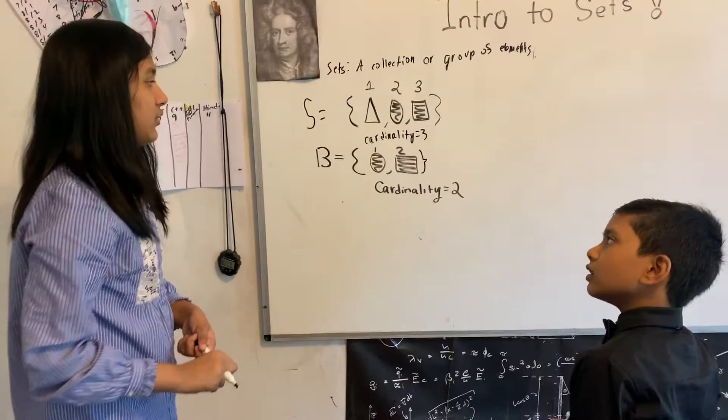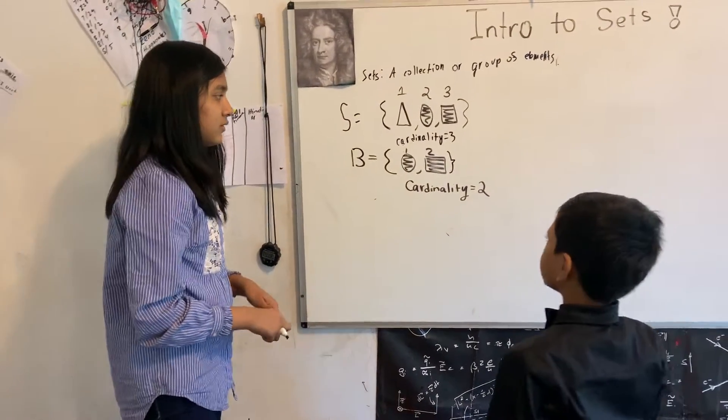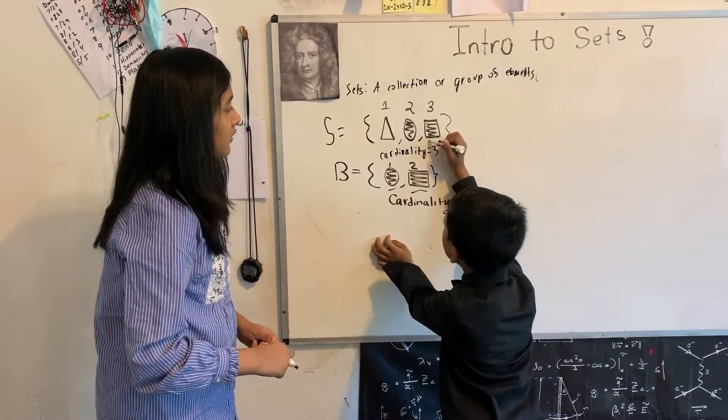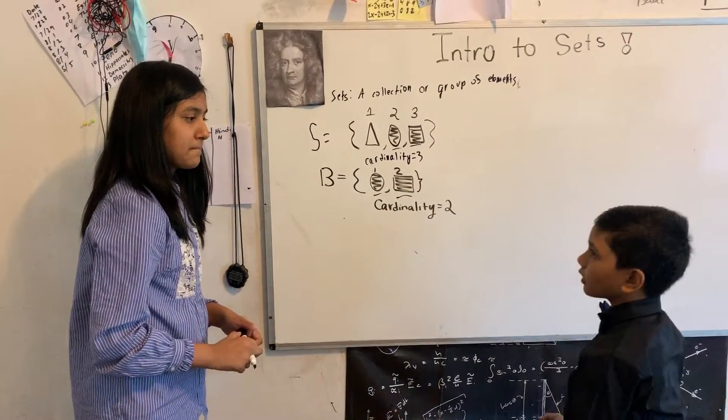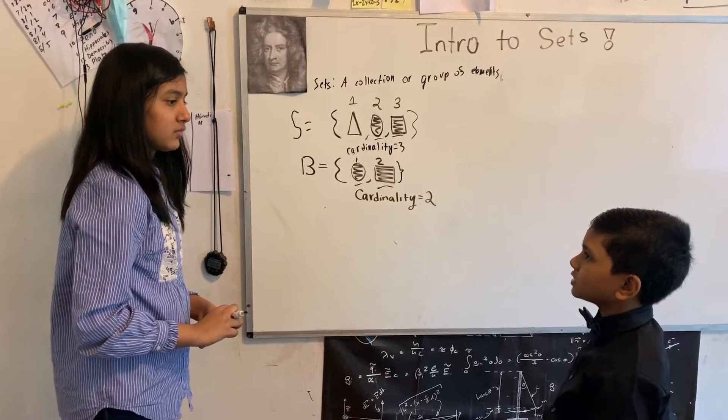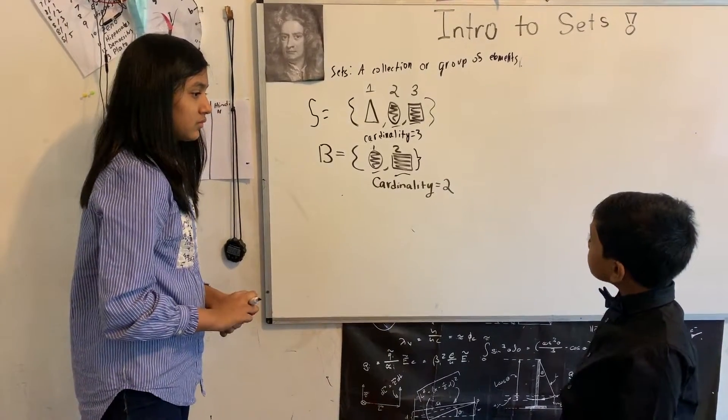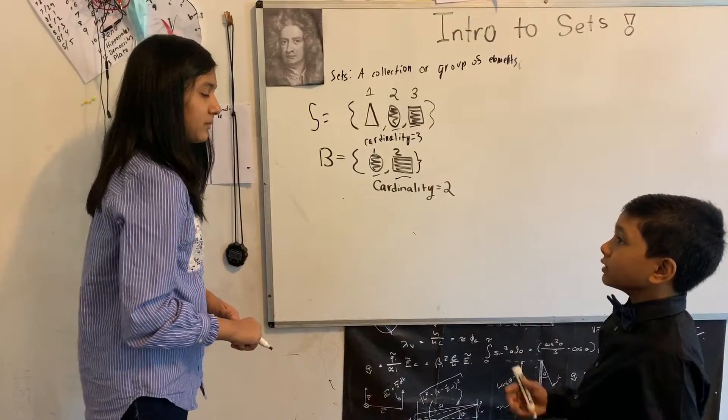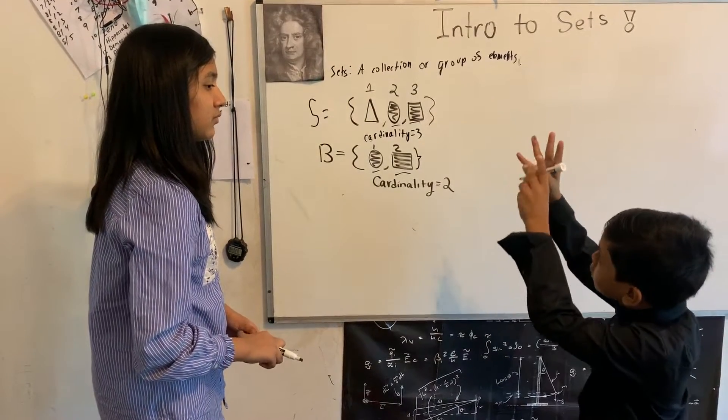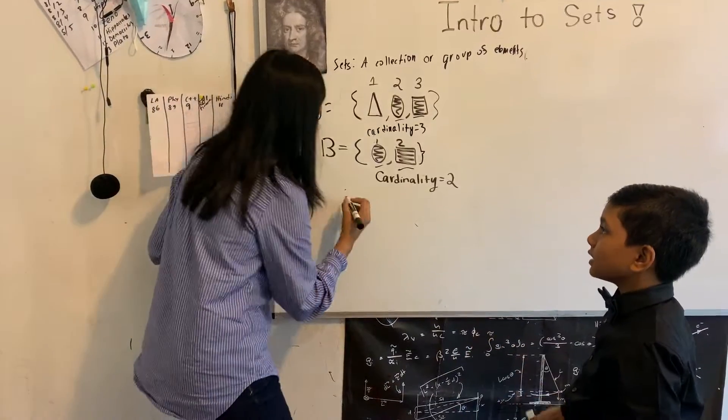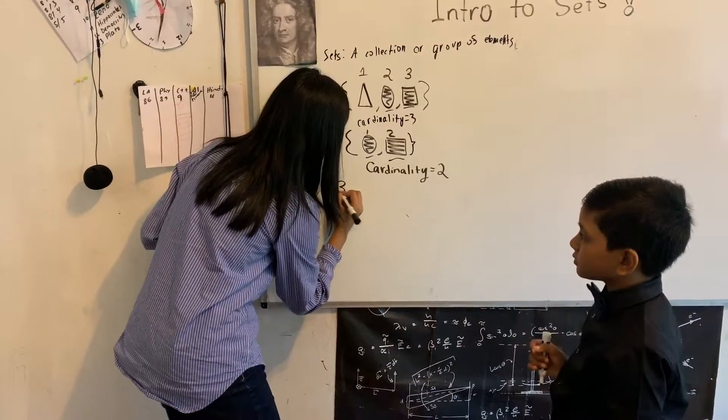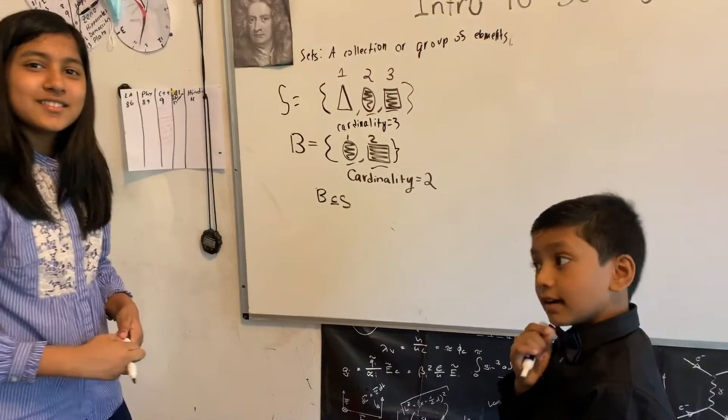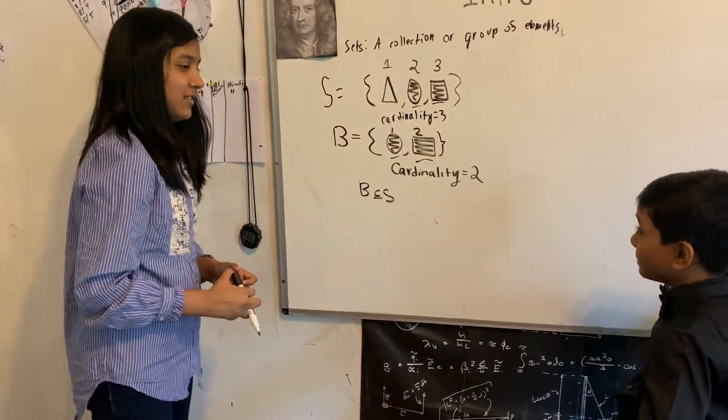So wait. I'm seeing something here. Both of these elements are included in the bigger set S. So I'm wondering, is B like a kind of little capsule that extracts a certain group from S? Are you talking about V? Oh yes, I think B is a subset of S.